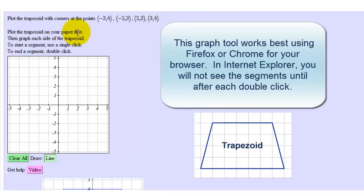The directions say plot the trapezoid on your paper first, then graph each side of the trapezoid. To start a segment or a side, use a single click, and to end a segment or end the side, double click.